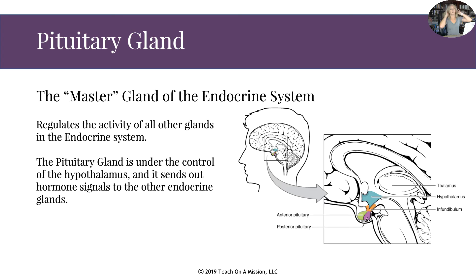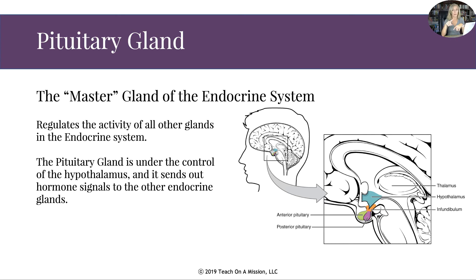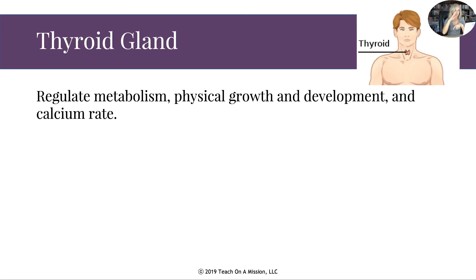Let's talk about the specific parts. The pituitary gland is in your brain — it's the master gland of the endocrine system. I give you a zoomed-in picture of where it is. It regulates the activity of all other glands in the endocrine system. It's under the control of the hypothalamus, and the hypothalamus, being part of the brain, is part of the nervous system — so that's really the link between the two systems. The pituitary gland sends out hormonal signals to other endocrine glands, letting them know they need to do their job.